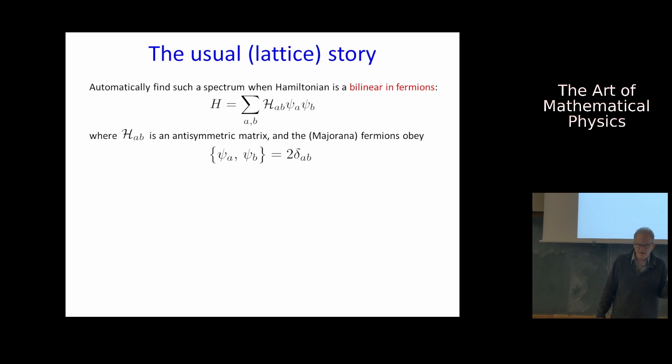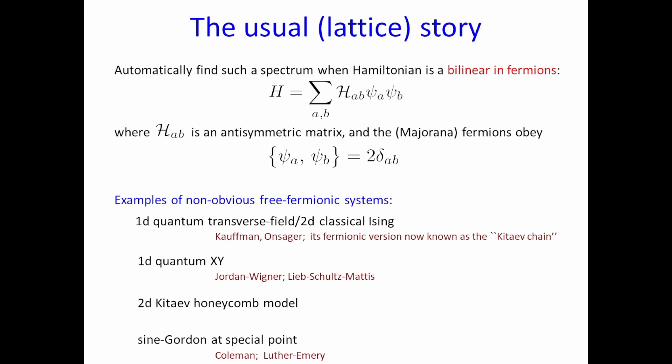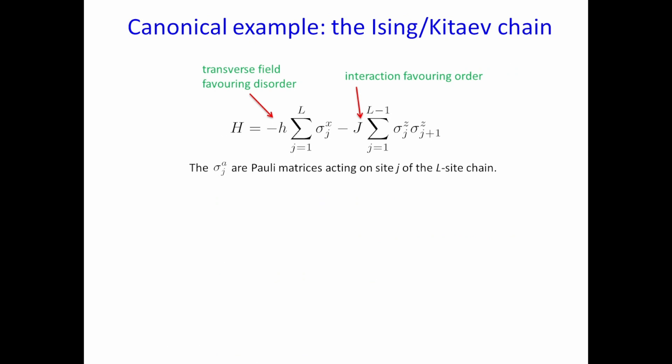You write down a bunch of numbers epsilon 1 through L, then all the energy levels of the system are determined by taking this formula and you just choose the plus or minus signs independently. A very convenient picture is the Fermi sea. Those are the levels that are filled, when you choose the minus sign here. The key thing is that this choice doesn't affect the epsilon values, the energy levels.